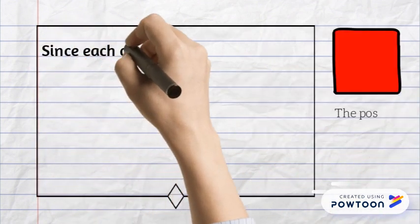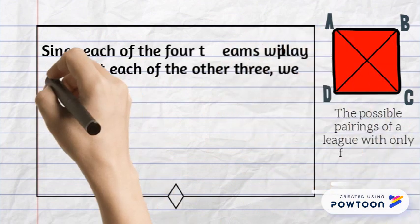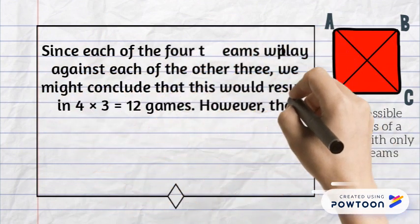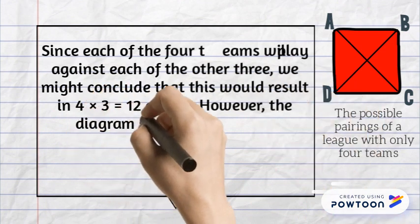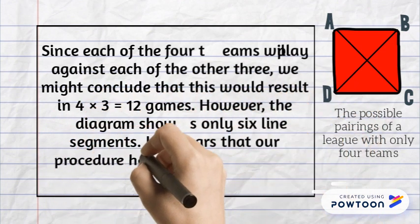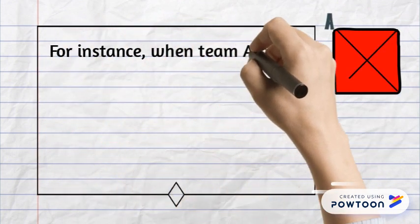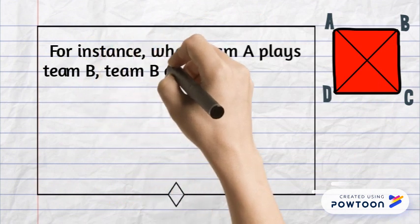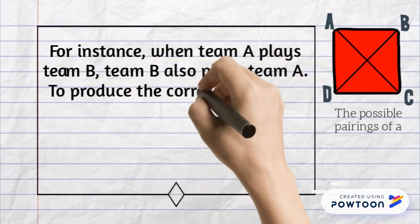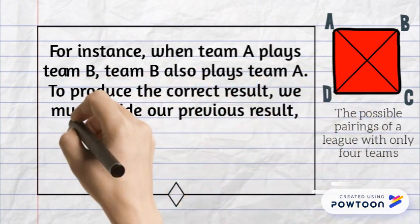Since each of the four teams will play against each of the other three, we might conclude that this would result in four times three equals twelve games. However, the diagram shows only six line segments. It appears that our procedure has counted each game twice — for instance, when team A plays team B, team B also plays team A.